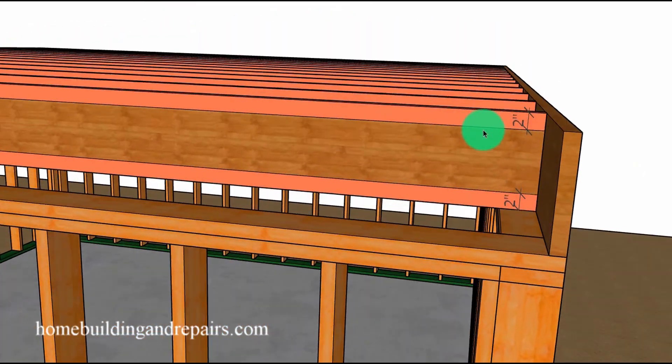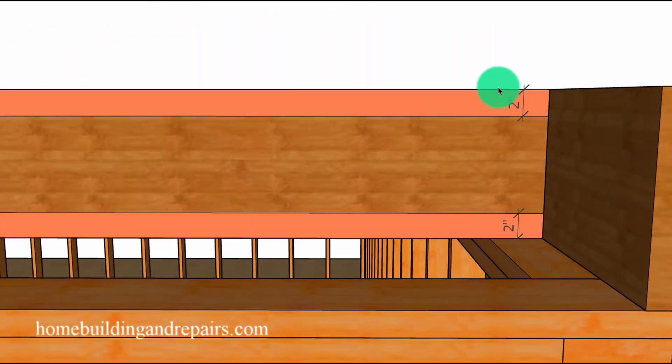First up, let's take a look at the two inch minimum distance from the top and the bottom. You are not allowed to drill in this area for any floor joists, whether they're going to be two by six or two by 14.